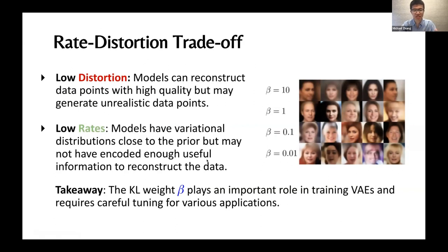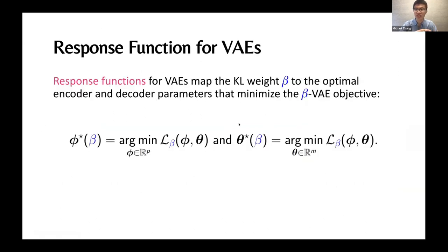Some additional background information will now describe the idea of a response function. The response function is something that maps from a KL weight beta to the optimal encoder and decoder parameters that minimize the beta VAE objective. You should think of this as we train to completion with a given value of beta and that gives us a variational autoencoder. We're trying to learn this mapping from this single beta to this high dimensional space that encodes the optimal parameters for that beta. This is the objective that we're actually trying to learn in our new framework.